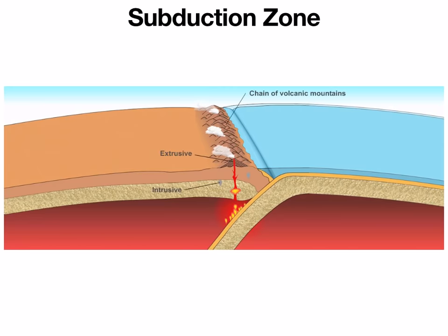When the oceanic crust sinks, it melts because it's hot down in the asthenosphere. That melting rock finds little cracks and crevices to rise through and ultimately erupts at the surface, forming active volcanoes. Some of the features we look for at subduction zones are a chain of tall mountains and active volcanoes, a deep ocean trench just off the coast, as well as lots of earthquakes which tend to happen along that subducting plate.